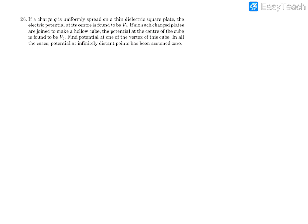Let's draw a plate first. This is a uniformly charged square plate having total charge Q. At the center point of this plate, the potential is said to be V1. This is V1 because of this charge distribution.